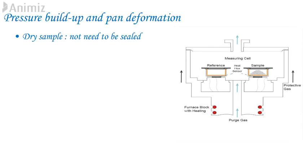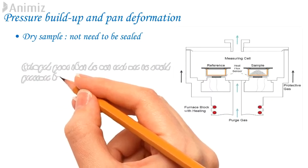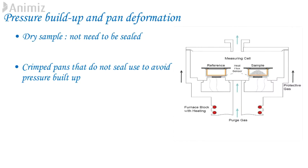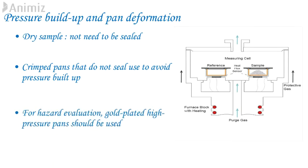Ultimately sample leaks and bursting can occur which usually result in contamination of analyzer. The best solution for such systems is to work with crimp pans that do not seal or use lids with holes in. If crimp pans are not available then it is better to penetrate a lid before encapsulation so that the pressure does not build. Sometimes one hole will block with sample and back pressure will force the sample out of the pan, so it is better to have more than one hole in the lid. For hazard evaluation gold plated high pressure pans should be used since these should be inert towards sample.